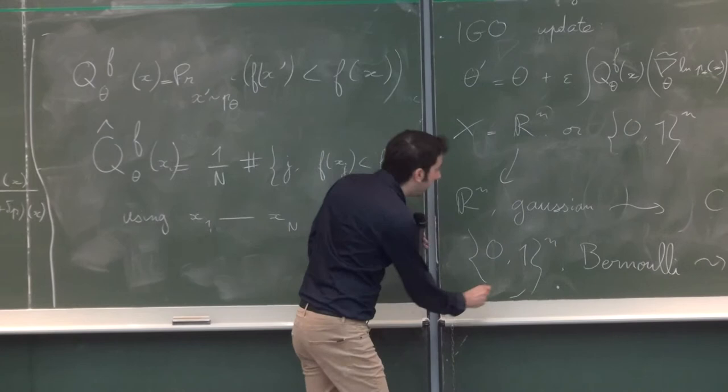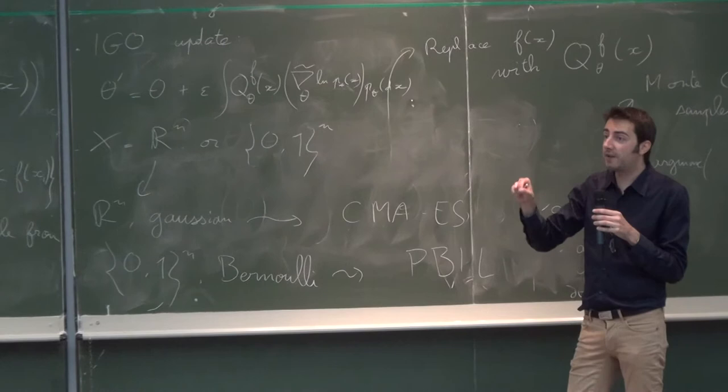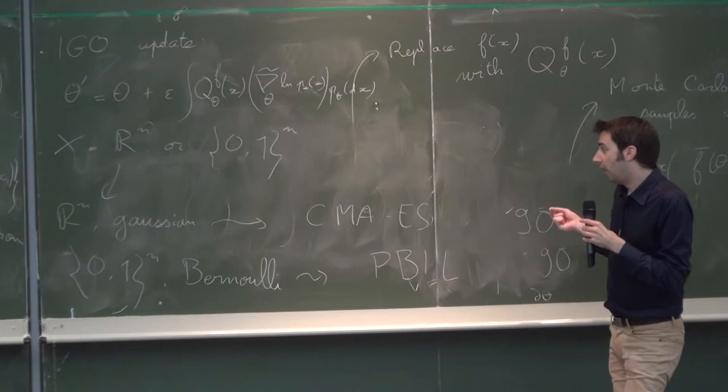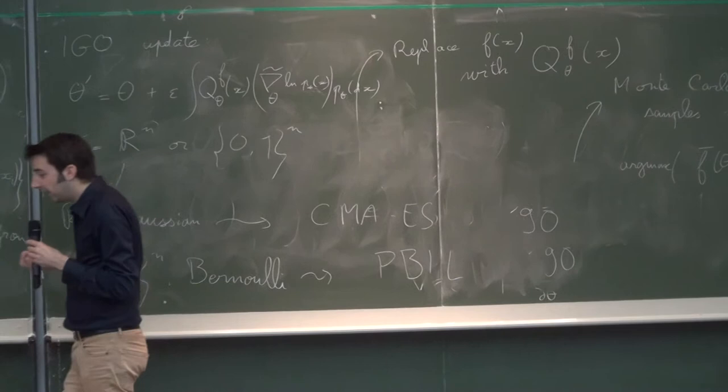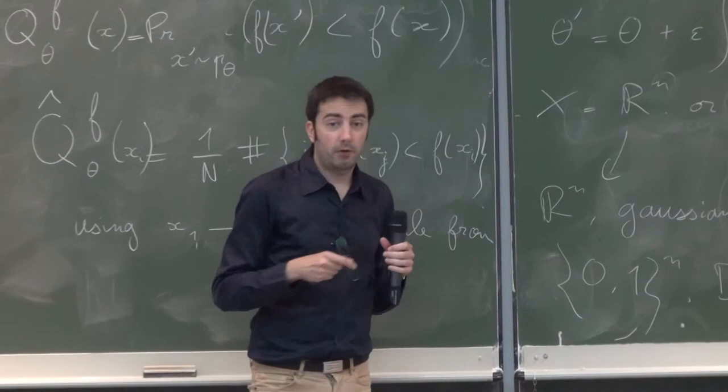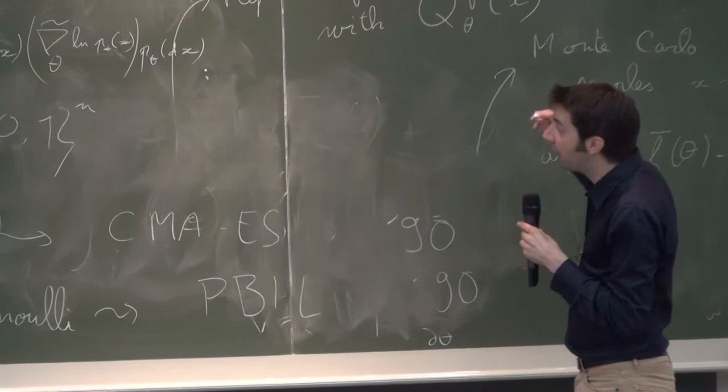We have tried this with richer distribution on the discrete cube search space. So instead of using Bernoulli distributions—a Bernoulli distribution on the discrete cube has a unique optimal, it has a unique maximum at some point, except when all probabilities are equal to one half—but you can define a more complex probability distribution on the discrete cube which are multimodal. For example, if you know about Boltzmann machines, you can define probability distributions on the discrete cube which have multiple maxima at various points. And this is very useful.